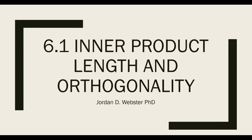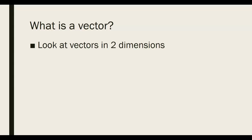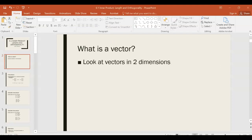In chapter 6, we're going to take an in-depth look at vectors and some of their uses. In section 6.1, we're going to talk about inner product, length, and orthogonality of vectors. We haven't dealt with this much, so I want to think about what a vector actually is — in essence, what a vector is in two dimensions. Most of you understand the idea that vectors have length and direction.